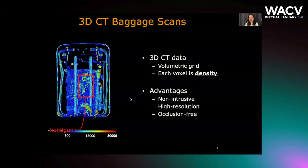CT data is volumetric. It is dense and contains values read by read. Each voxel represents the physical density at that point. For example, air has low density and iron has very high density. 3D CT scans have the advantage of being non-intrusive, high-resolution, and occlusion-free. The urgent need is to utilize 3D baggage scans to classify secure and dangerous bags and to detect and segment weapons in the bag.